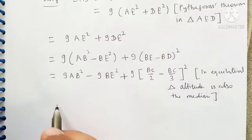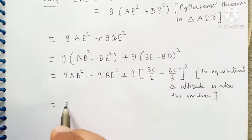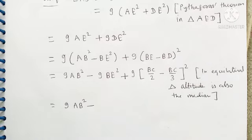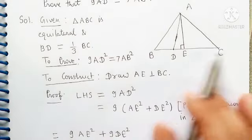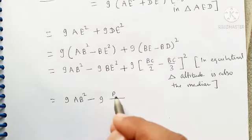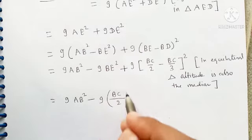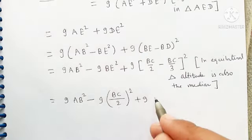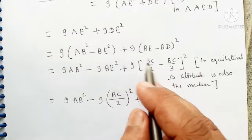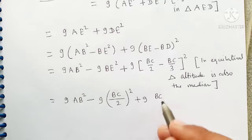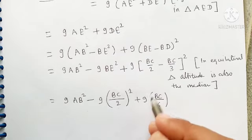So we have here 9AB square and BE can be written as, you can see BE is BC by 2. So 9BC by 2 square plus 9. Here we take LCM. So LCM is 6 and 3BC minus BC, BC by 6 square.